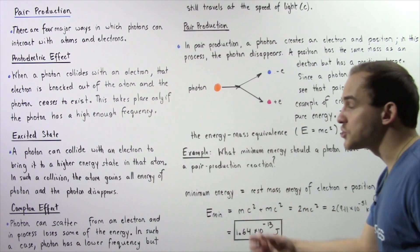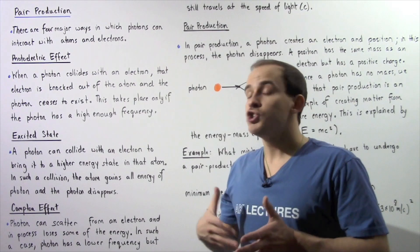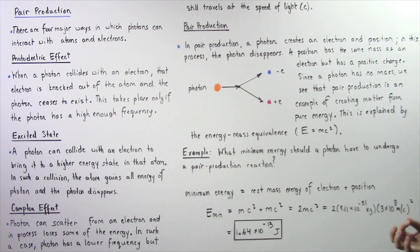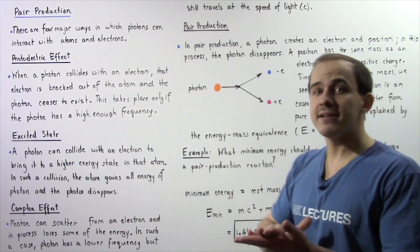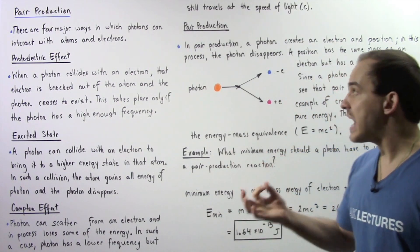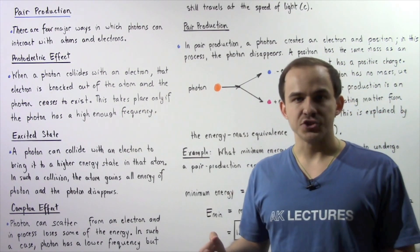So this represents the minimum energy that a photon can have to actually undergo the process of pair production. If the photon has an energy that is less than this amount, that basically means that photon cannot undergo this pair production process.